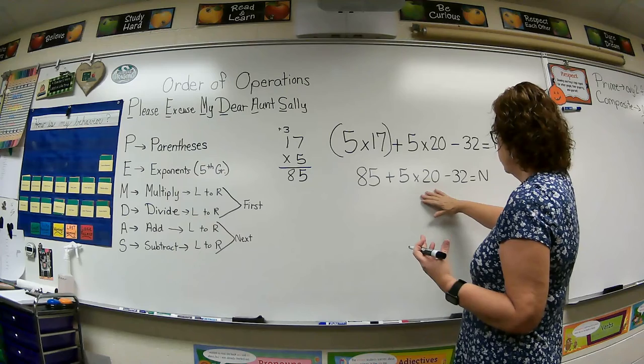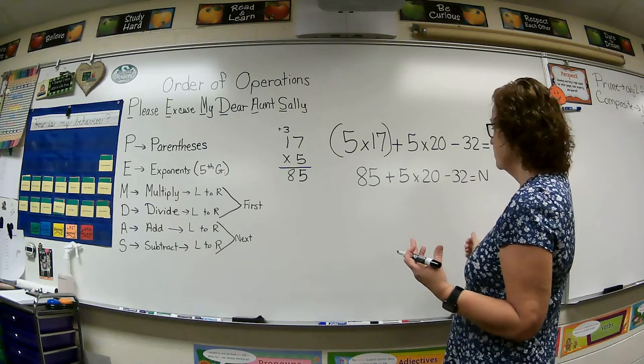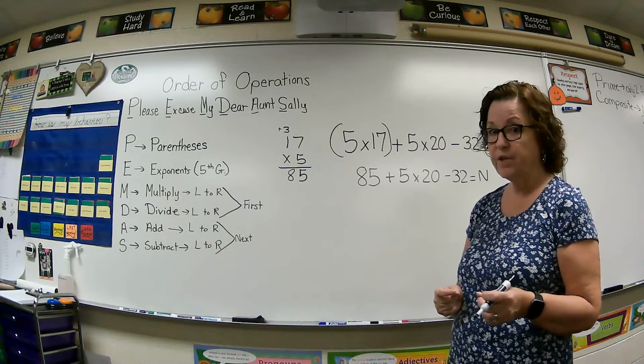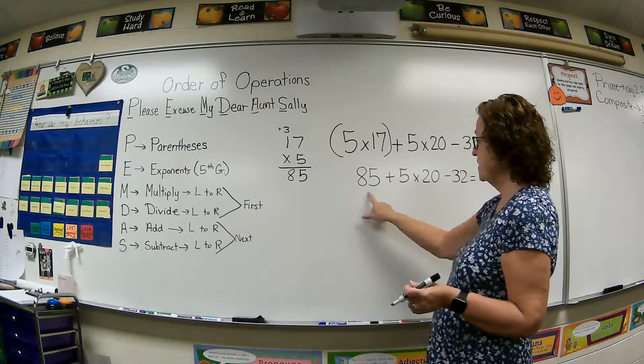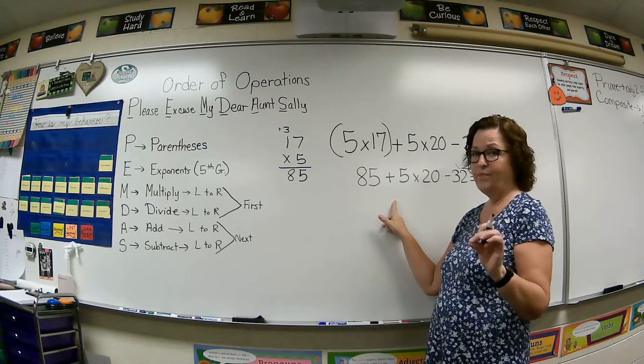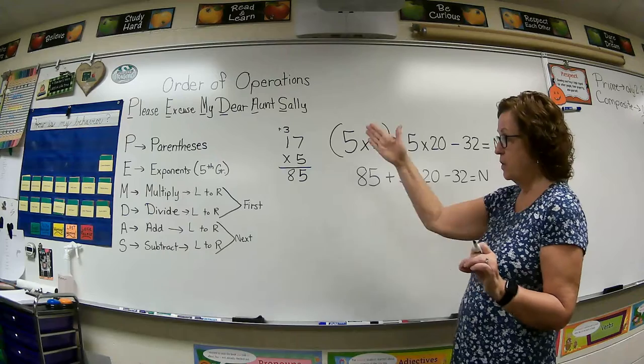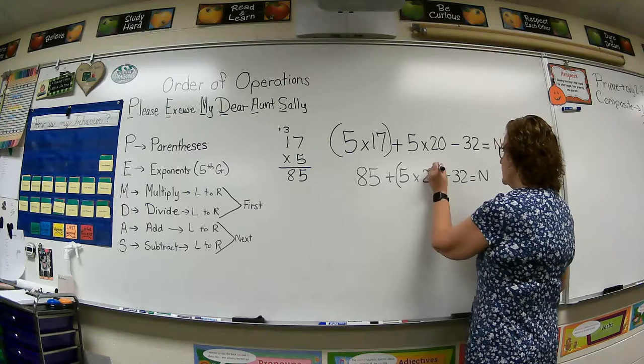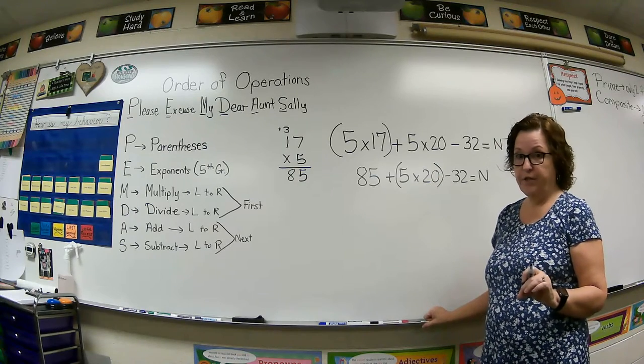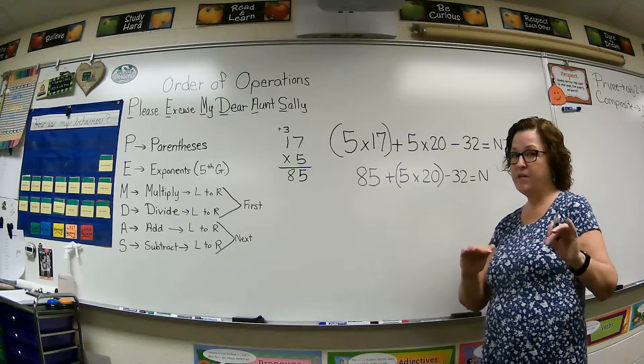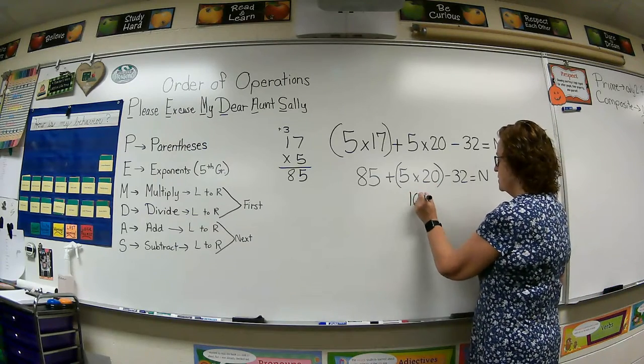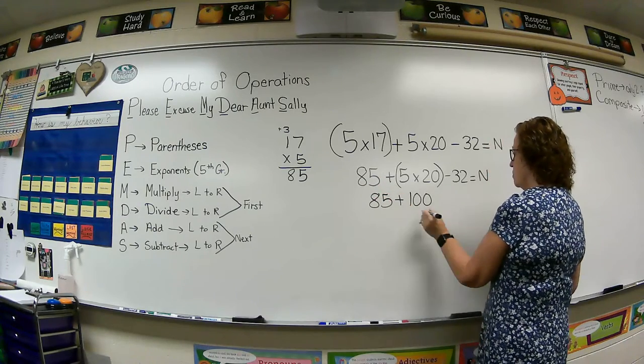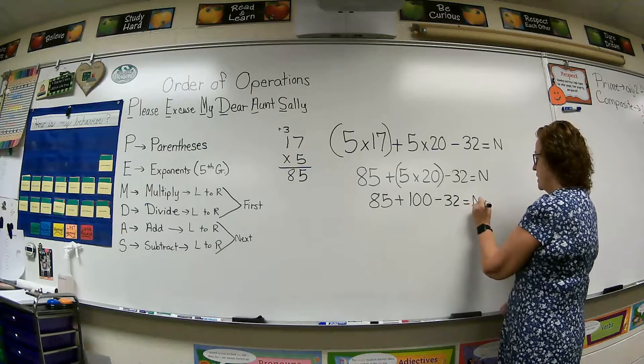Let's see. 85 plus 5 times 20 minus 32 equals N. Now, according to my order of operations, I still have to do multiplying and division first. You can see this first and think, oh, that's 90. Don't do that. You have to look at the whole thing and go in the order of operations. So here's a multiplication problem. So I'm going to put parentheses around that because that's what we want to do first in this new equation. It becomes new every time. So 5 times 20, I know that in my head, that's 100.